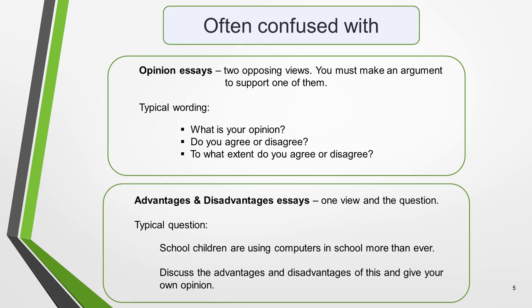The key to identifying this type of question is that you're required to discuss both views. This is different from opinion questions, also known as agree or disagree essays, where you must decide between two opposing views and make an argument to support your own opinion — typically worded as 'What is your opinion?', 'Do you agree or disagree?', or 'To what extent do you agree or disagree?' The other essay type students confuse with discussion essays is advantages and disadvantages essays, where the statement contains just one view — for example: 'School children are using computers in school more than ever. Discuss the advantages and disadvantages of this and give your own opinion.' Incorrectly identifying the question type means you'll use the wrong essay structure.